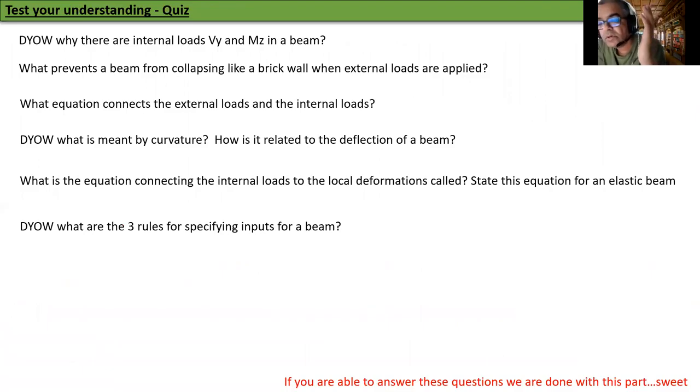We are done. Time to test your understanding. Here is the quiz. Describe in your own words why there are internal loads VY and MZ in a beam. What prevents a beam from collapsing like a brick wall when external loads are applied? What equation connects the external loads and the internal loads? Describe in your own words what is meant by curvature. How is it related to the deflection of a beam? What is the equation connecting the internal loads to the local deformations called? State this equation for an elastic beam. Describe in your own words what are the three rules for specifying inputs for a beam. If you are able to answer these questions, we are done with this part.